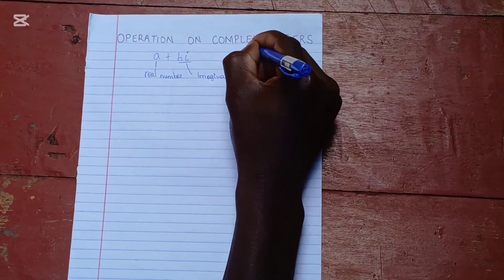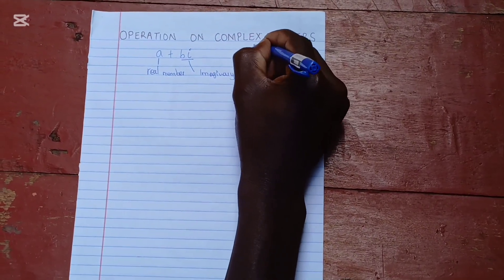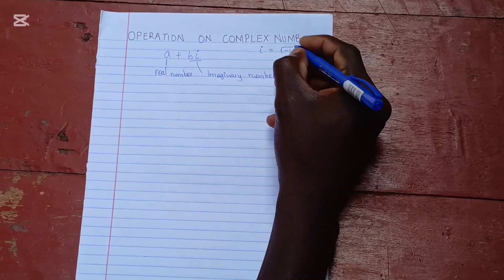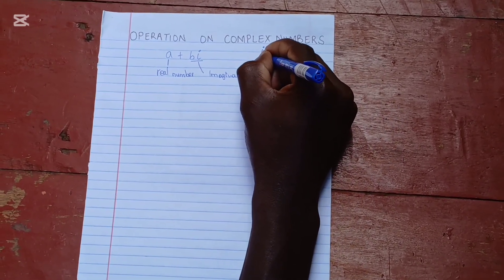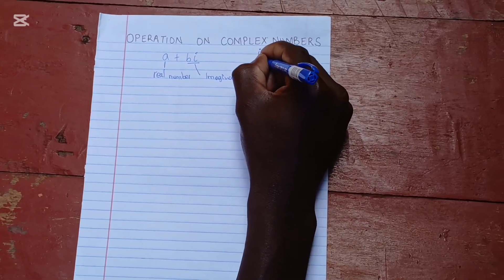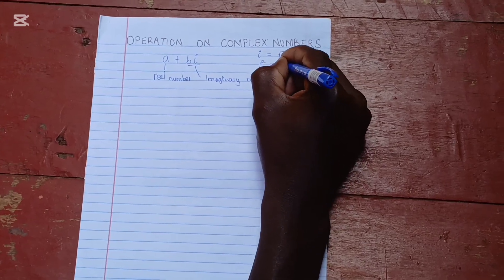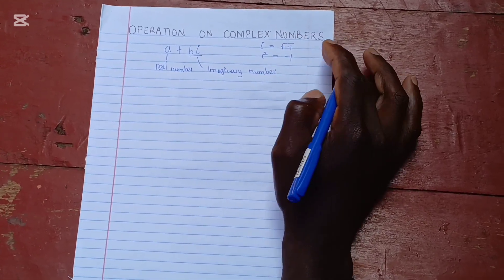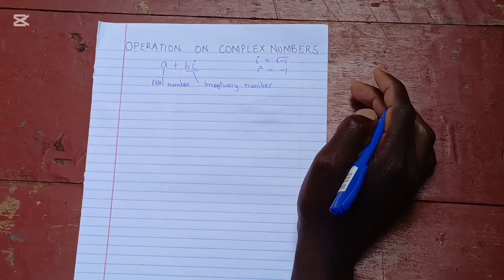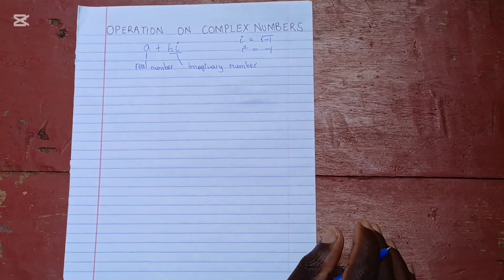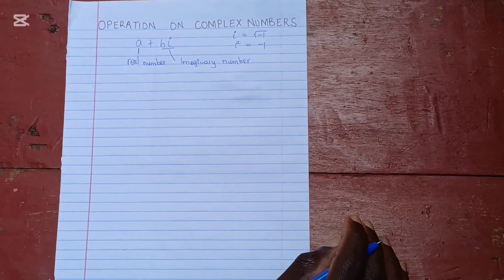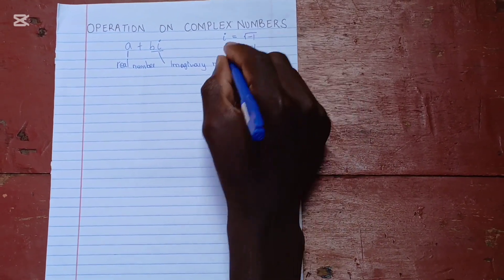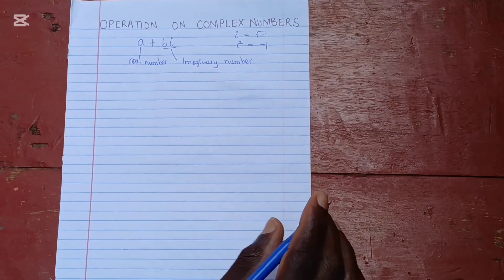The imaginary i is the same as the square root of negative 1. We can say i squared is the same as negative 1, because if you square the square root of negative 1, it gives you negative 1. To understand operations on complex numbers, we are mostly going to use i squared equals negative 1.